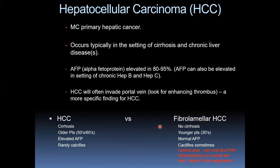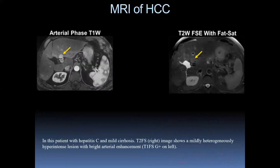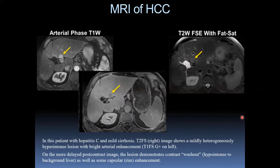HCC's cousin — fibrolamellar HCC — typically occurs in younger patients, no cirrhosis, normal alpha-fetoprotein levels, can see calcifications and a central scar. Theoretically, fibrolamellar HCC can look like focal nodular hyperplasia but will have a more aggressive appearance. Here is an MRI of hepatocellular carcinoma in a patient with hepatitis C and mild cirrhosis: a mildly heterogeneously hyperintense lesion on T2 with bright arterial enhancement. On the more delayed post-contrast image, the lesion demonstrates contrast washout, becoming hypointense to the background liver, with capsular rim enhancement.